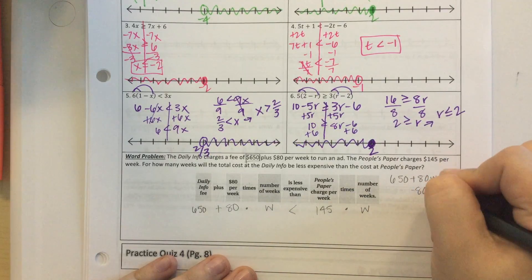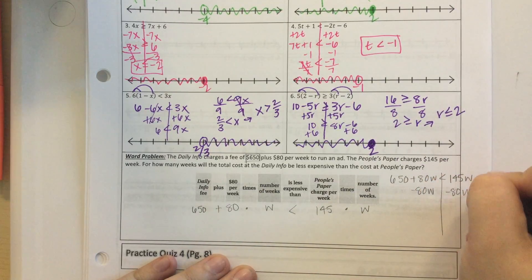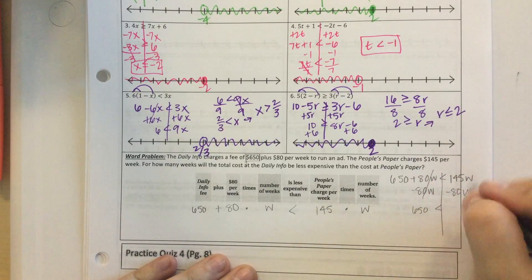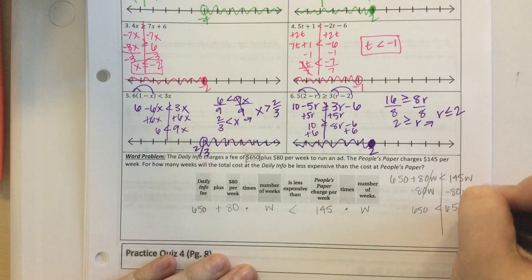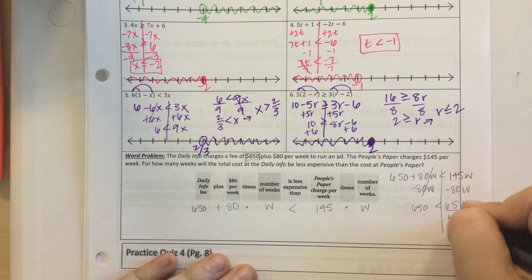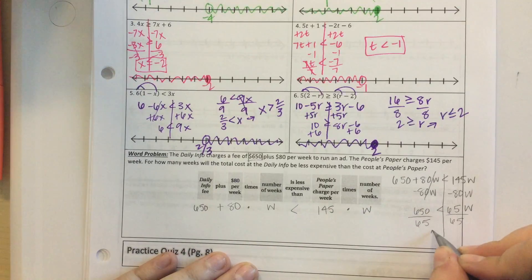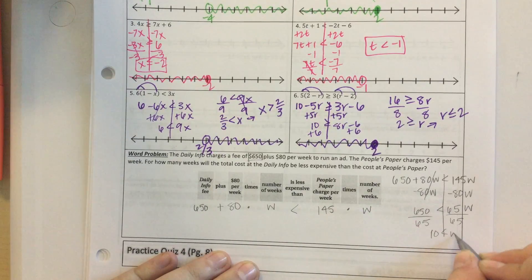I'm going to subtract $80W. I'm left with $650 less than $65W. Divide by $65, and I get $10 less than W.